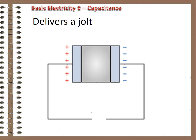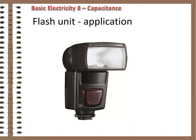The capacitor will slowly discharge, or if connected to a load, deliver a jolt of energy dependent on its resistance and storage capacity. Camera flash units typically consist of a battery, capacitor, and bulb, plus other components.